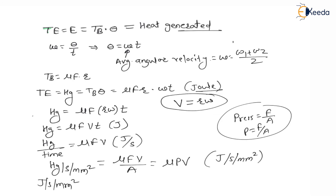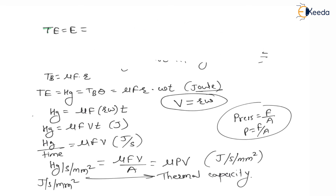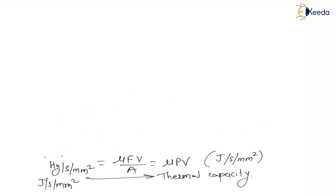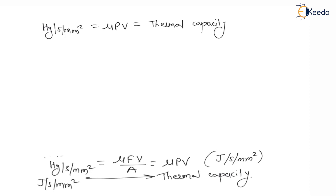This quantity mu·P·V is called the thermal capacity. Heat generated per unit time per unit area = mu·P·V = thermal capacity. This thermal capacity — which is directly proportional to the product of pressure and velocity — is what determines the wear of any friction material. The wear rate of material is directly proportional to pressure × velocity (P·V).